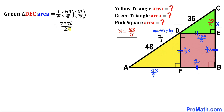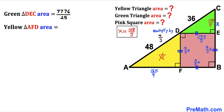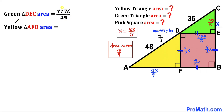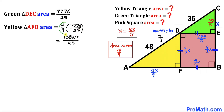The green triangle area is 7776/25. For the yellow triangle AFD, instead of applying the area formula again, we use the area ratio. Since the side length ratio is 4/3, the area ratio is (4/3)² = 16/9. So the yellow triangle area = (16/9) × (7776/25) = 13,824/25.